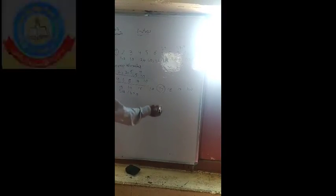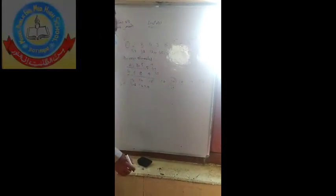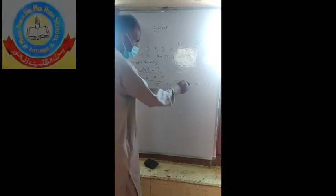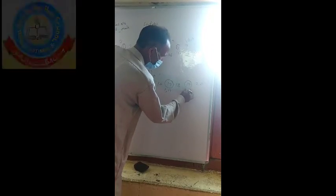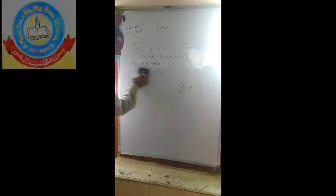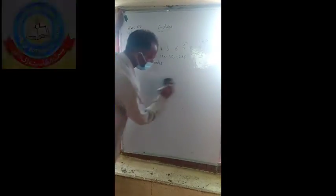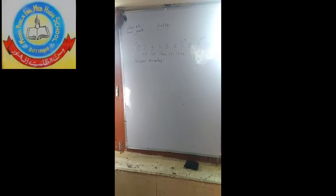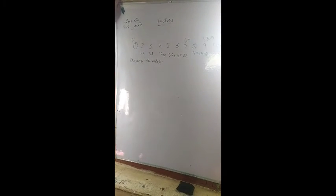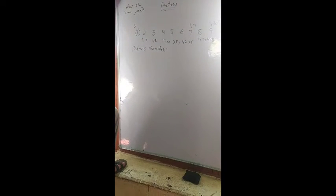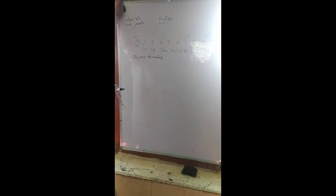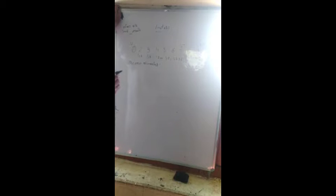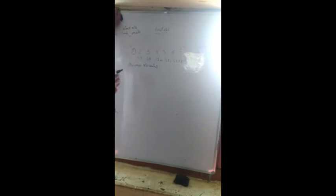Seventeen has only two factors, one and seventeen, so it is a prime number. Eighteen is a composite number. Nineteen is a prime number with only two factors, one and nineteen. Twenty is a composite number. To recap: one is a unique number, two is prime, three is prime, four is composite, five is prime, six is composite, seven is prime, eight, nine, ten are composite, and thirteen is prime.